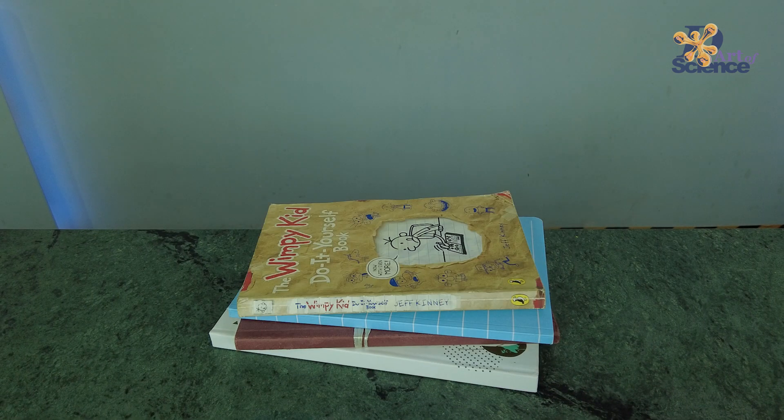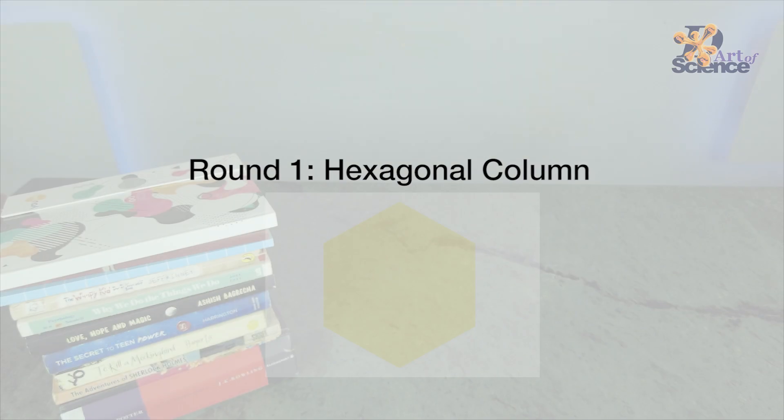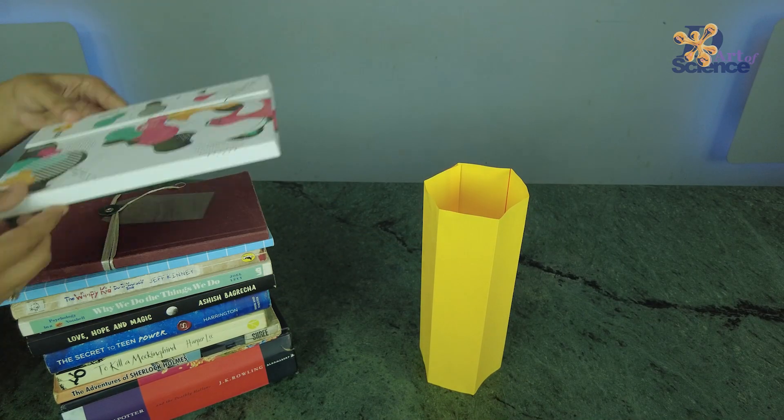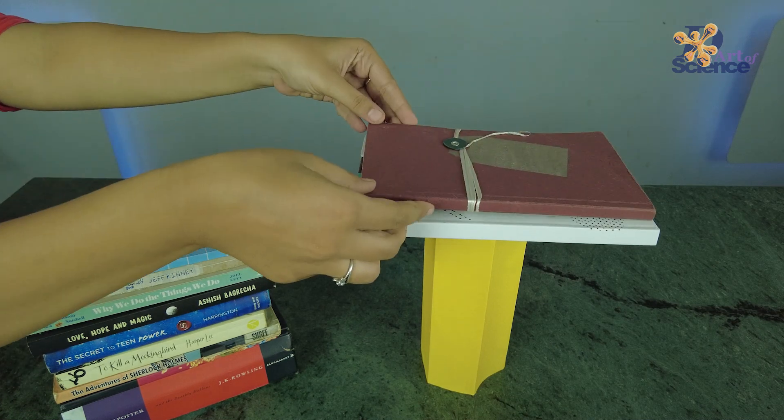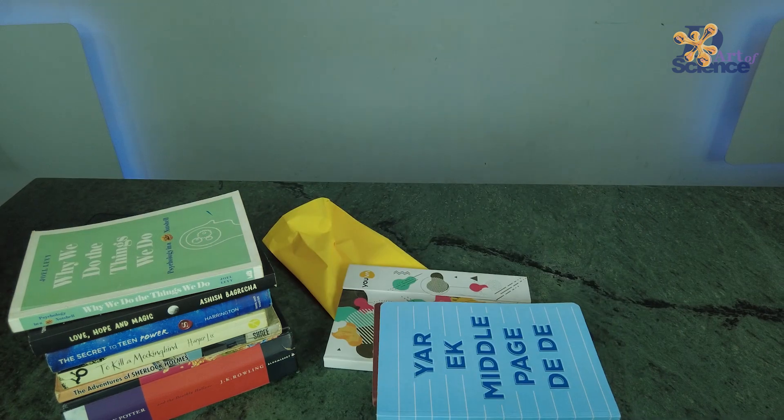To test the strength, let's add some books on our columns to see which one is the strongest. Let's start with the hexagon. Keep adding the books in the exact same order for better comparison. It could only take 4 books.